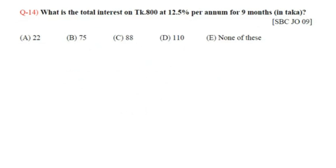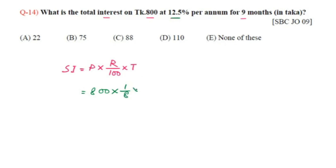Question number 14: What is the total interest on taka 800 at 12.5% per annum for 9 months? Using simple interest formula: SI = P × R/100 × T. Principal = 800, rate = 12.5% = 1/8, time = 9/12 = 3/4 years. SI = 800 × (1/8) × (3/4) = 100 × (3/4) = 75. Option B, taka 75, is the answer.